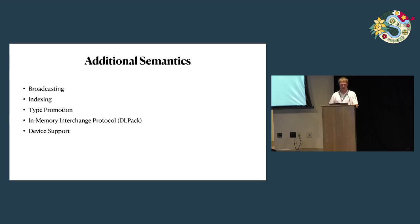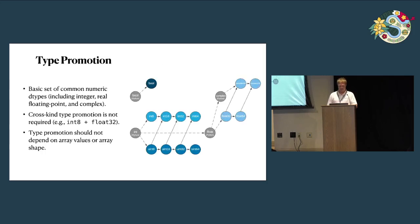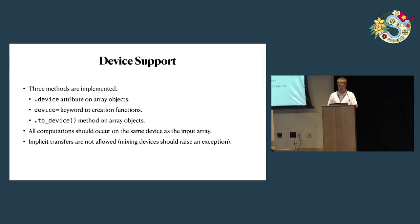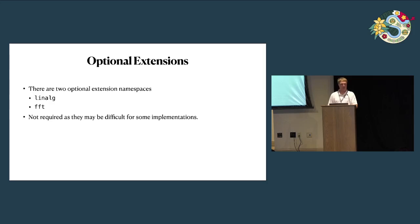In addition to functions, there are additional semantics specified: broadcasting, indexing, type promotion, an in-memory interchange protocol using DLPack, and specification for device support. For type promotion, we specified basic numeric dtypes; cross-kind promotion — such as promoting an integer and a float together — is not specified. Type promotion should work independently of array values and array shapes, so there's no value-based casting. We also have some optional extensions for linear algebra and FFTs, since those may be difficult for some libraries to implement.